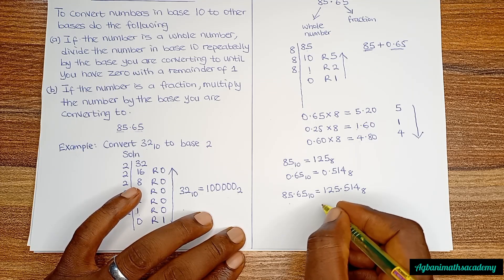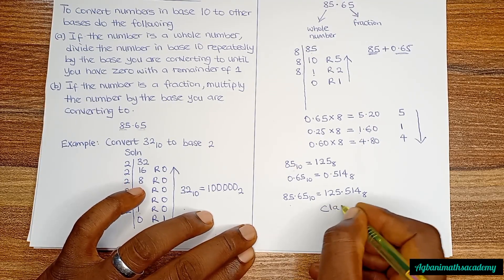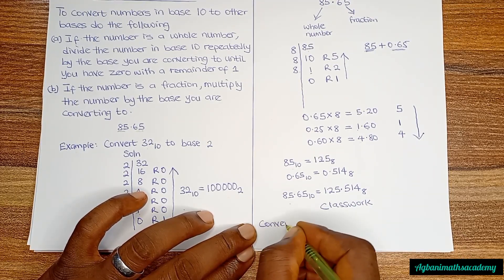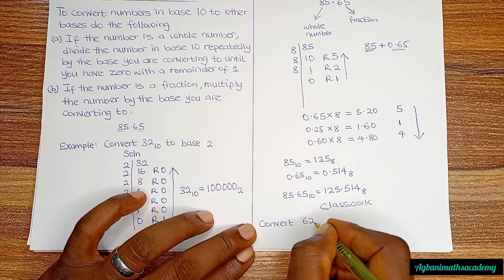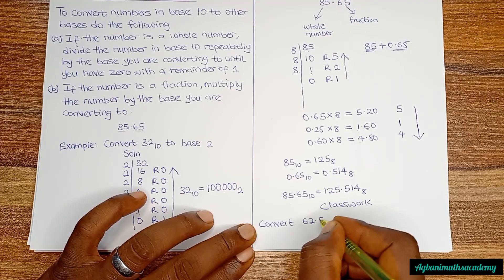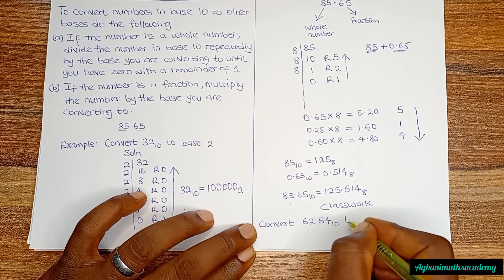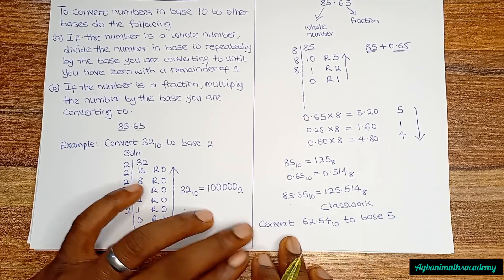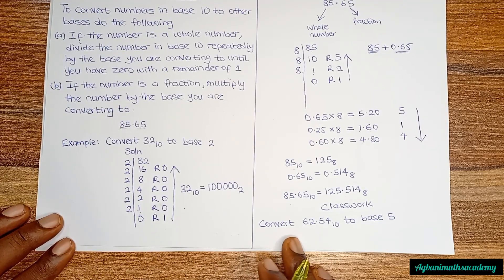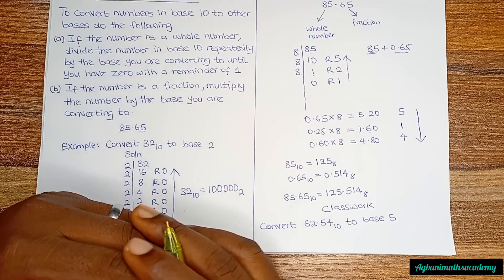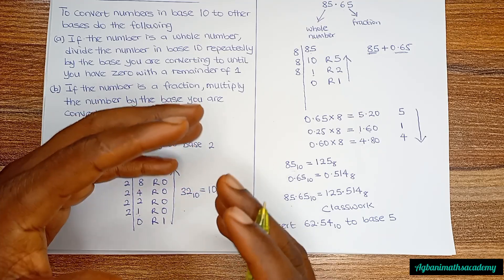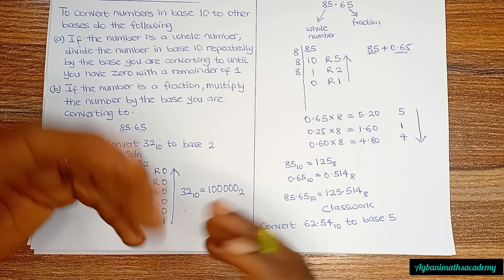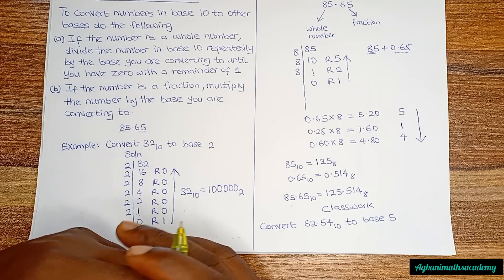I'd like you to try out this classwork and leave your answer in the comment section: Convert 62.54 base 10 to base 5. I hope you enjoyed the video. In the next video we are going to look at how to convert numbers from other bases to base 10. Don't forget to like the video, share with your friends, and subscribe for more math content. Bye!